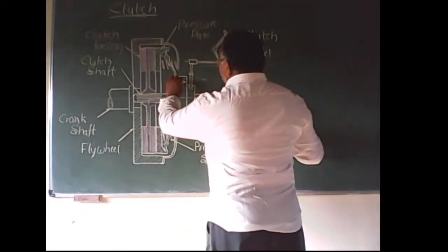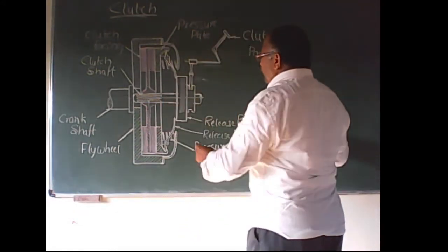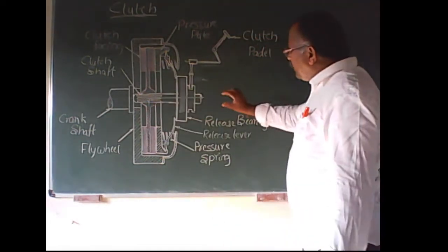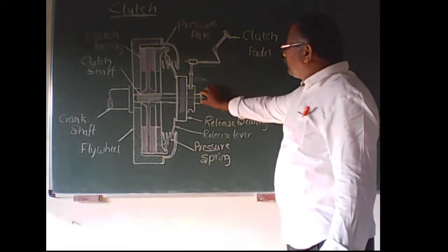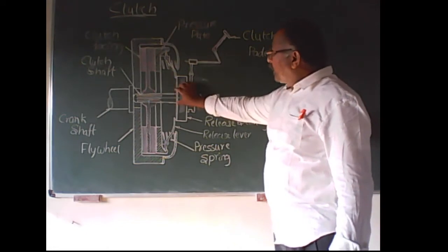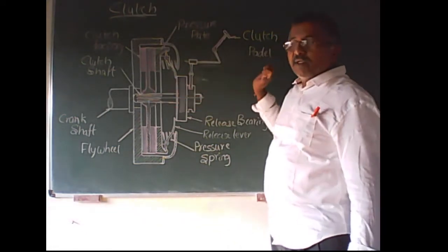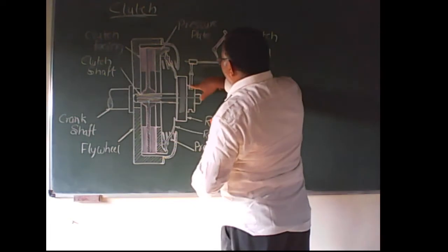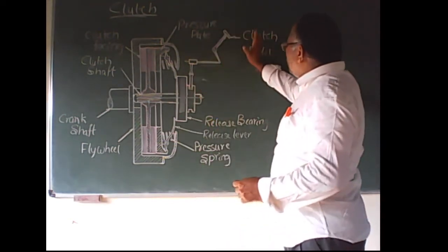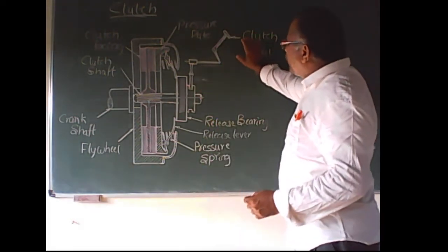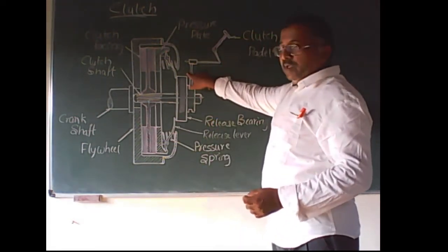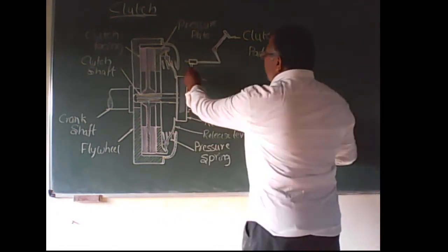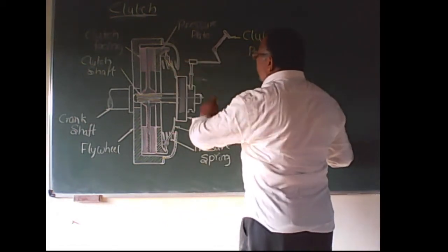The operating system release bearing is free on the clutch shaft and slides freely forward and backward over it. It is linked to the clutch pedal through the linkage — a link rod and fork.